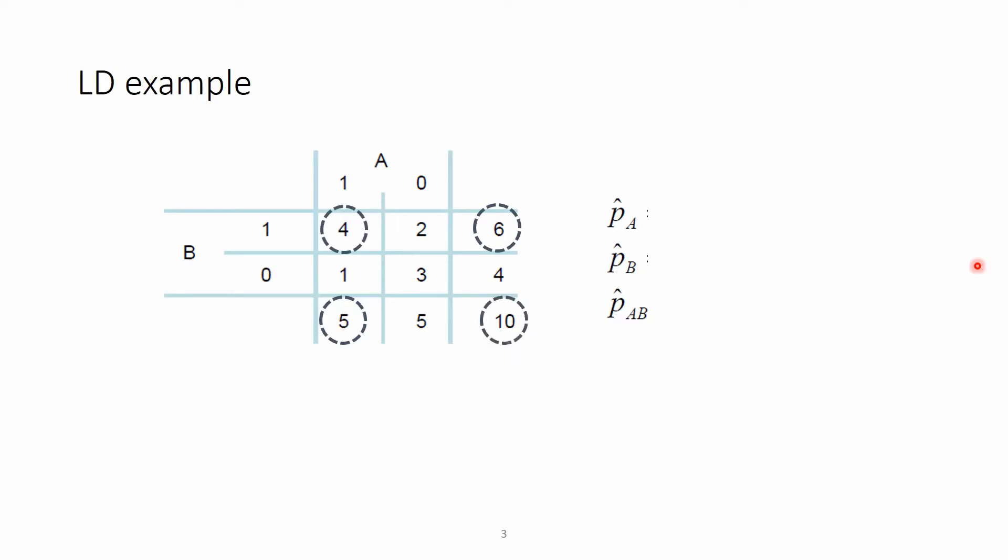Because we are speaking about proportions, we need to divide them with the sum of all alleles. So the proportion of A is 5 divided by 10, so 0.5 in this case. Proportion of the B allele is 6 divided by 10, so 0.6, and the joint occurrence is 4 divided by 10, 0.4.